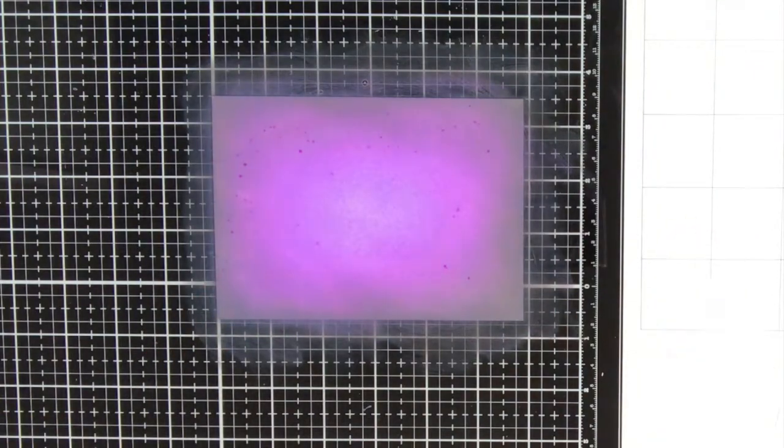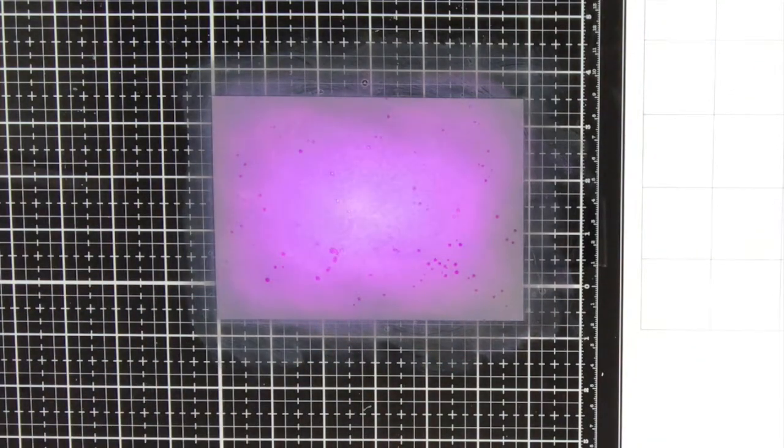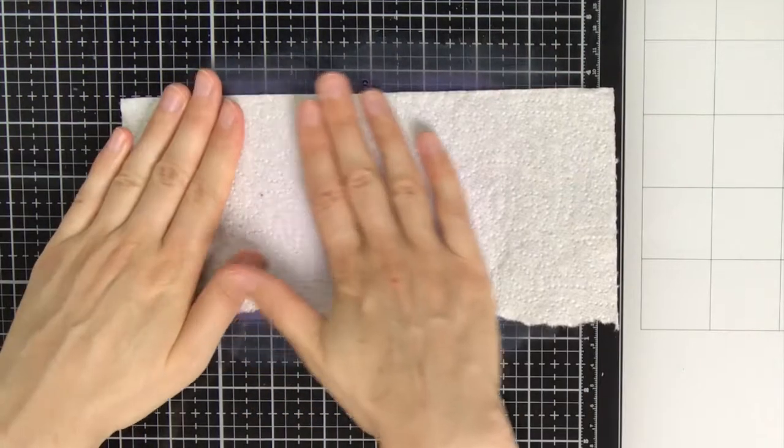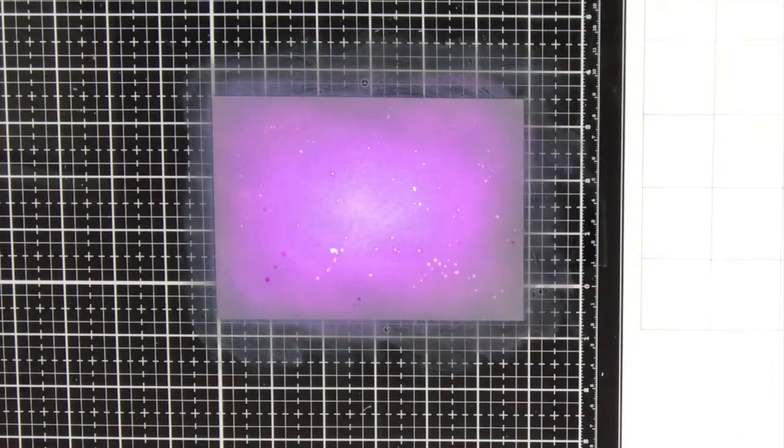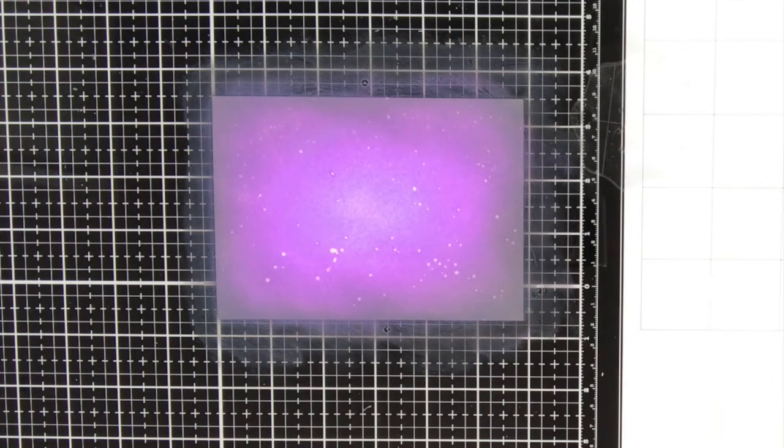Then to add some more texture and interest to the background, I'm going to add some splatters. These splatters are with clear water, and I let that sit for a while and then pick it up with a paper towel and you will get these nice light spots in the background.